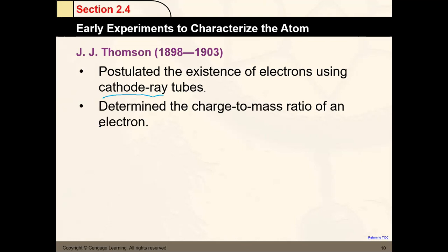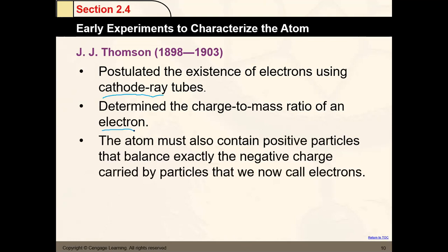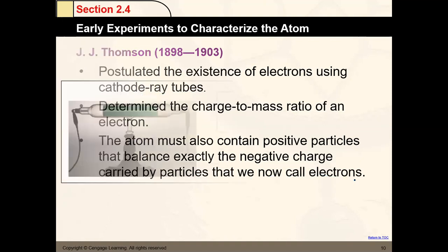Thomson determined the charge-to-mass ratio of an electron. He also proposed that atoms contain positive particles. He noticed that there is something negative and something positive inside the atom. He didn't call them electrons and protons at that time, but he definitely noticed that both charges are inside the atom. Now we know that it is the electron.